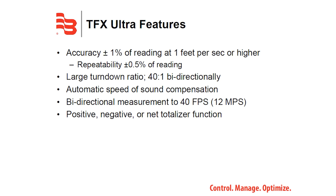The TFX Ultra offers repeatability of plus or minus 0.5 percent of reading, a large turndown ratio of 40 to 1 bi-directionally, automatic speed of sound compensation, bi-directional measurement to 40 feet per second, and a positive, negative, or net totalizer function.